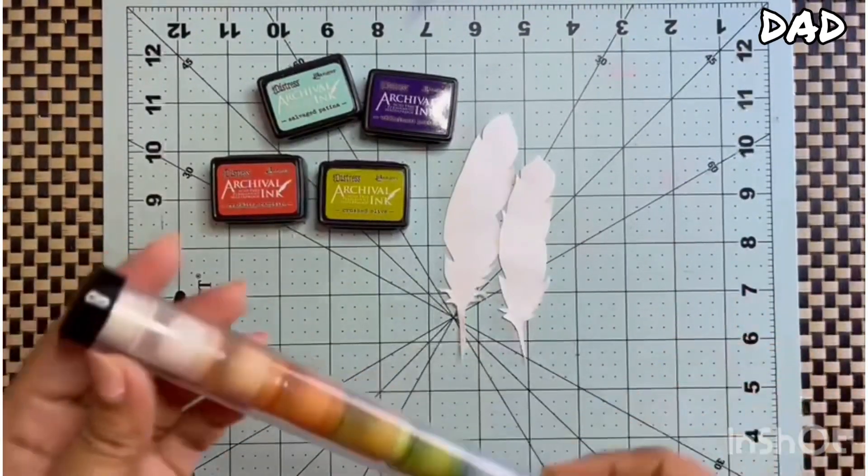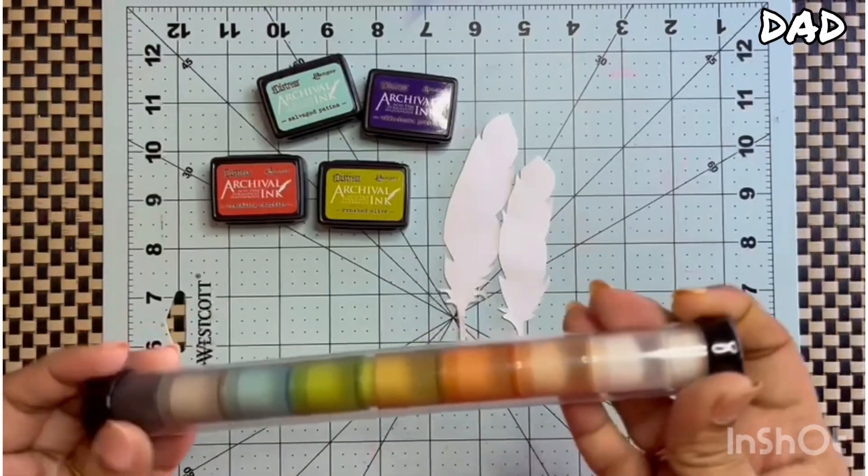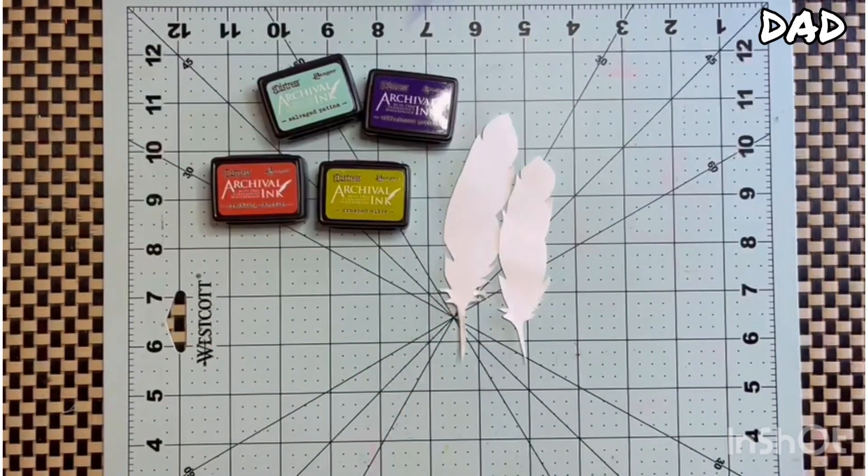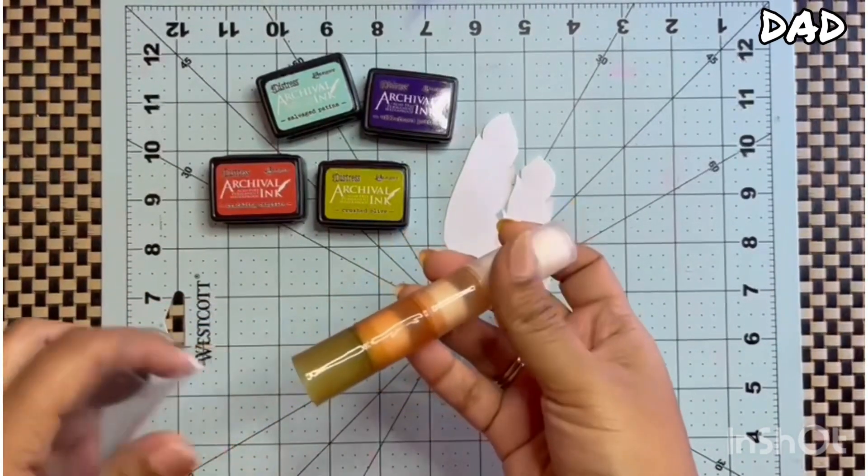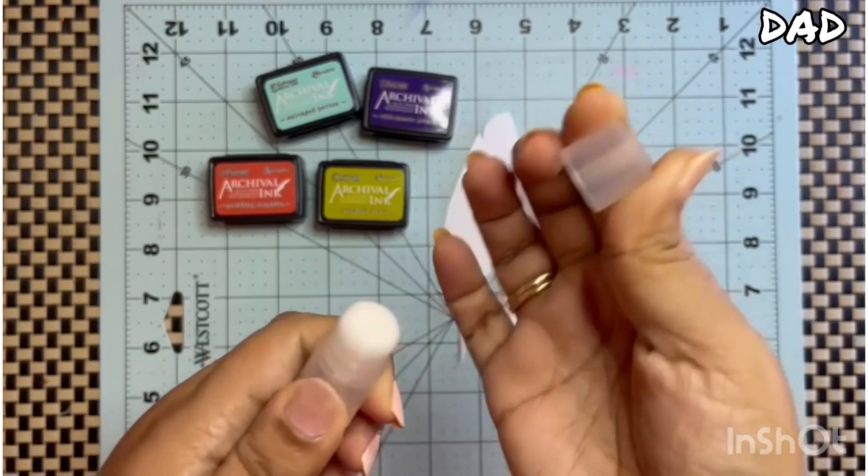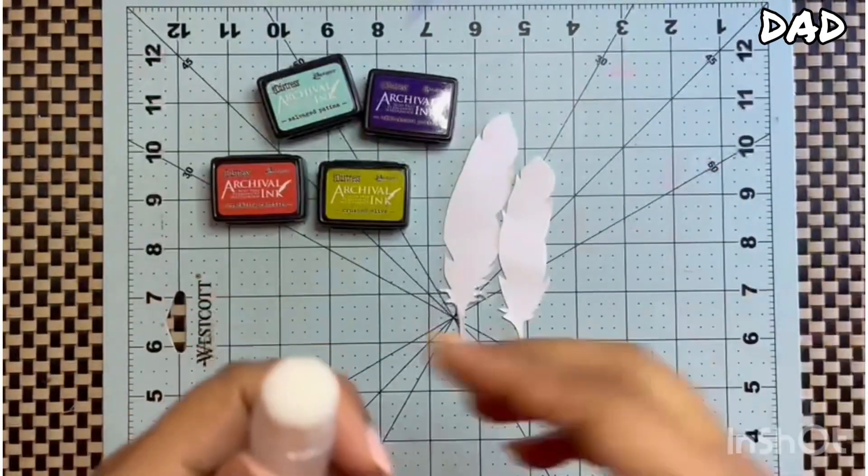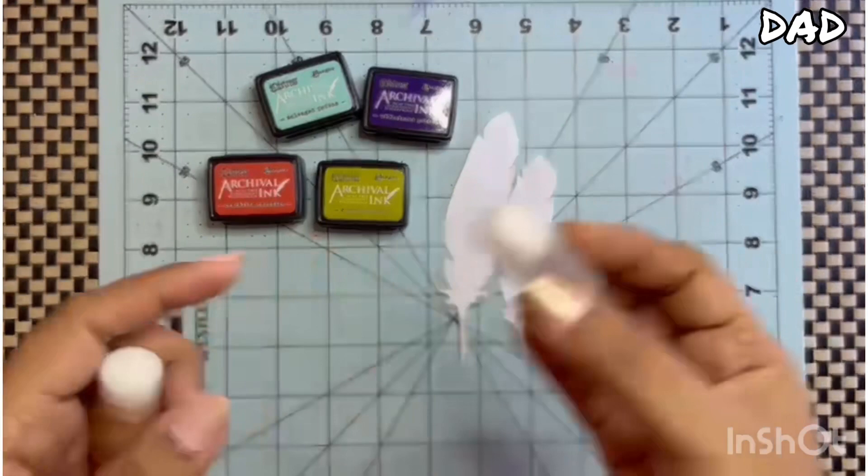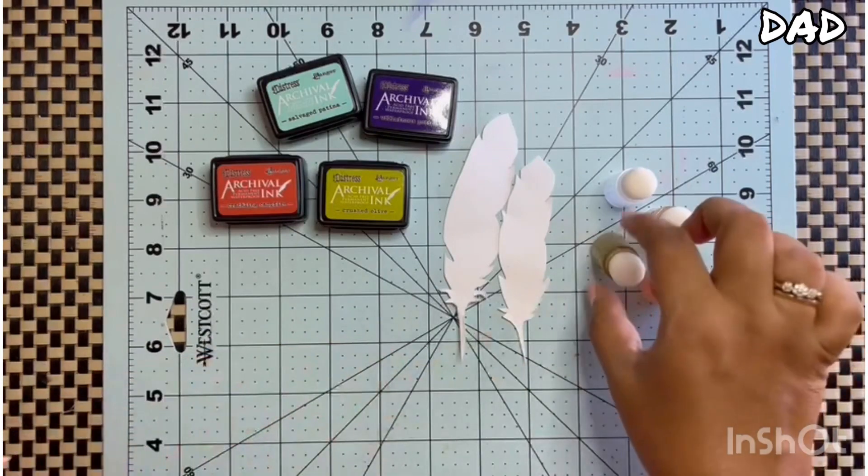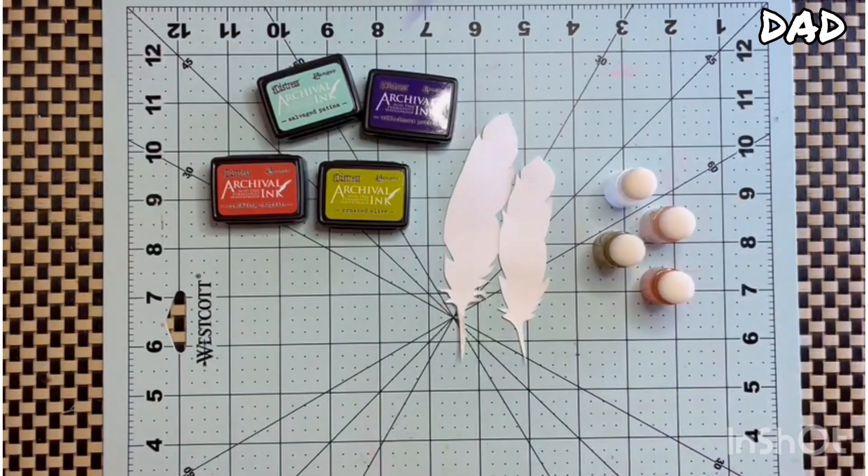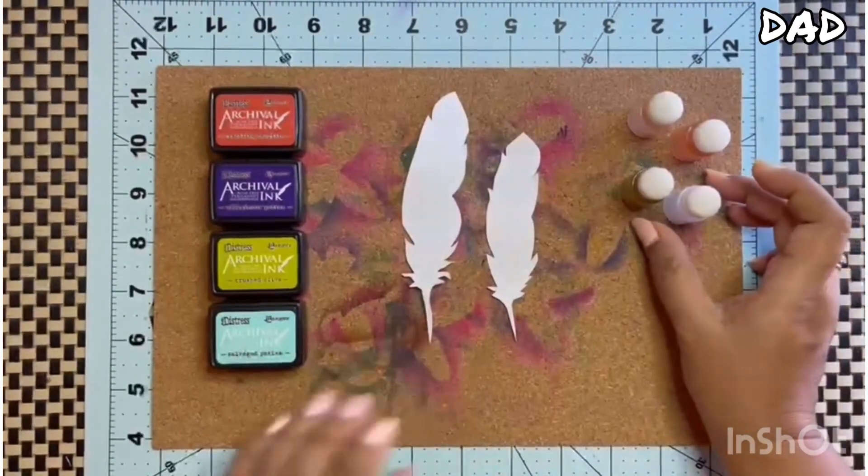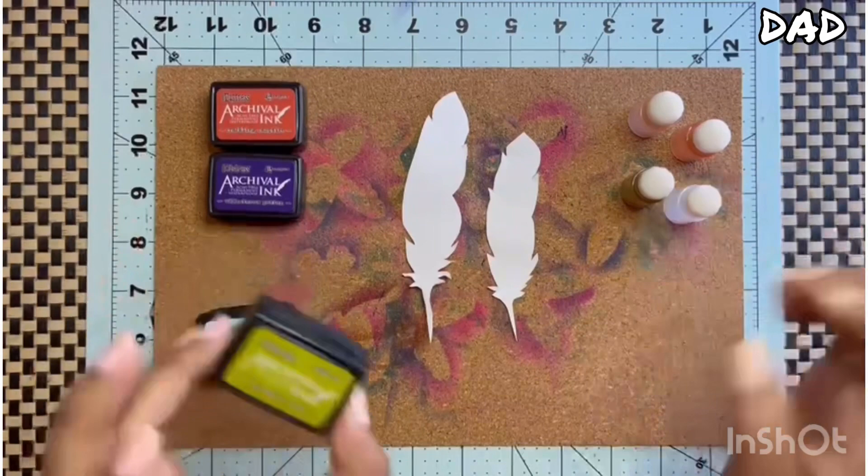These are my four colors which I will be using to give color to my feathers. And this is my ink blending tool. This is also very new to me. This is the first time I will be using it. I do not know how it is going to work. Let's try and see. Wow, it has a small tiny cap on top.